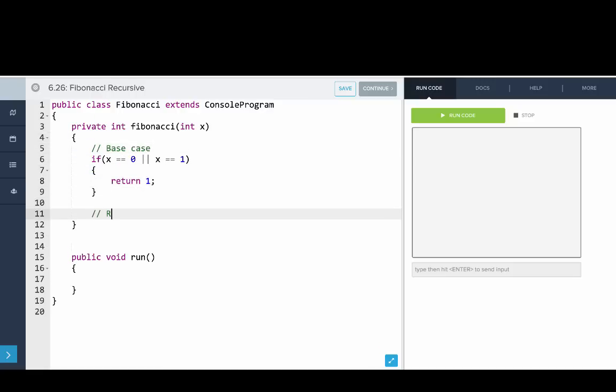And then the recursive case is to get a Fibonacci number we add the two previous Fibonacci numbers. So we say return Fibonacci of x minus 1 plus Fibonacci of x minus 2.